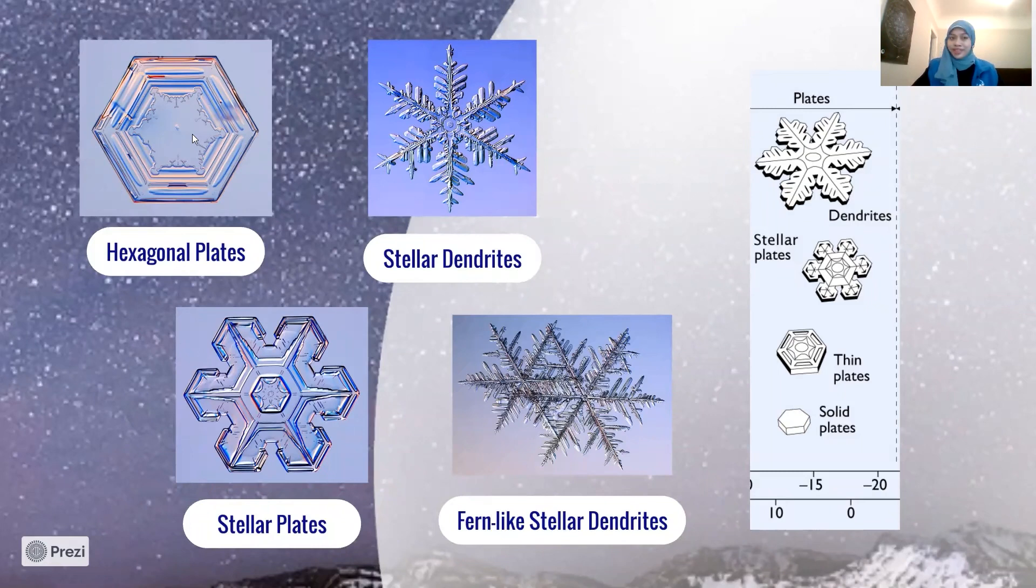Now more commonly than the hexagonal plates, we also have the stellar plates, which are pretty similar to hexagonal plates, only that they have bumps or arms that branch out from the center like this one.